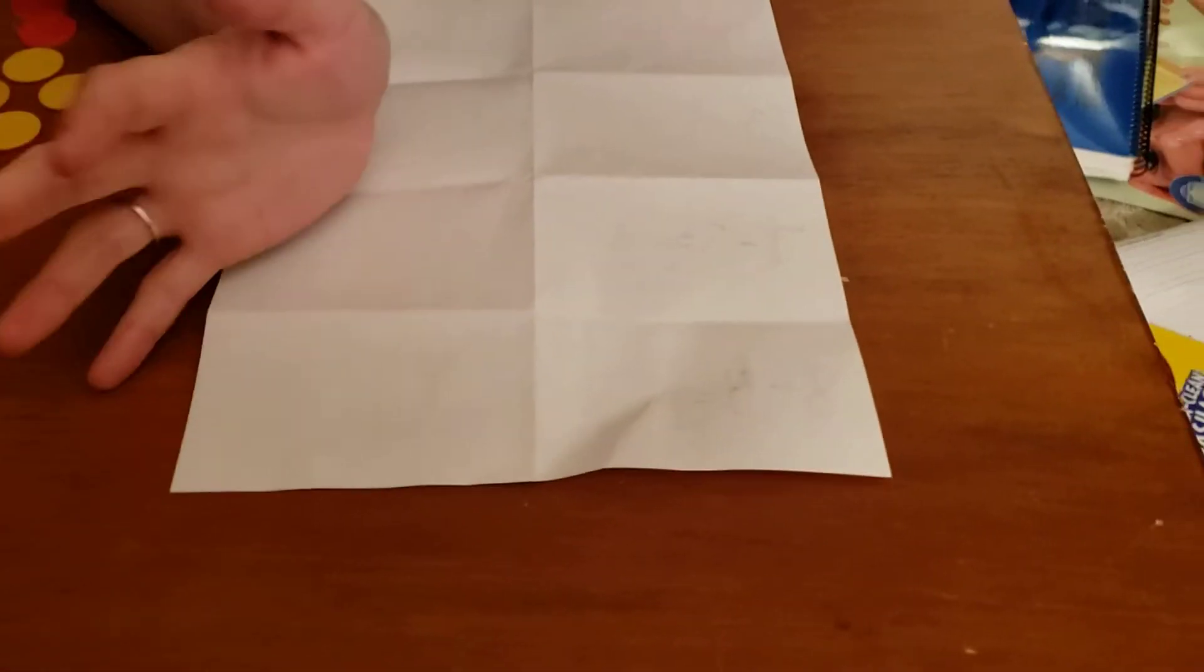All right, we're practicing subtraction again today. Remember yesterday we talked about learning how to write our subtraction number sentences up and down? We've been used to writing them side to side, and now we're going to flip it and start at the top and work our way down. Remember it was pretty easy because the numbers all stay the same. You just have to move them into a straight line.